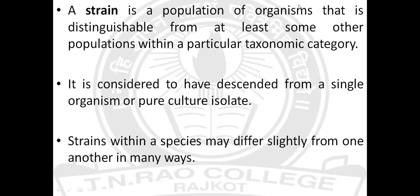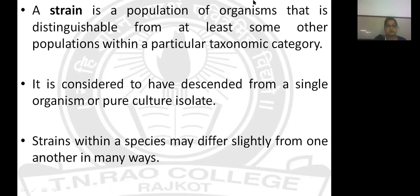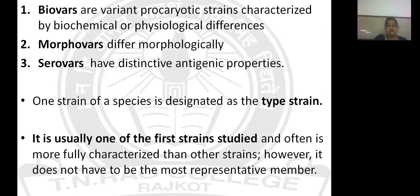A pure culture is the culture of an organism coming from the multiplication of a single isolate. The strains within a species may differ slightly from one another in morphology, biochemistry, and serology, but that difference lies within a 10–20% range since their DNA is more than 70% similar. Depending upon their differences, strains are categorized as BioVar, MorphoVar, and Serovar.